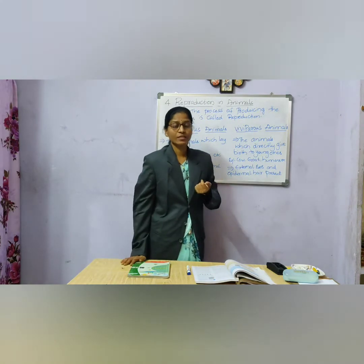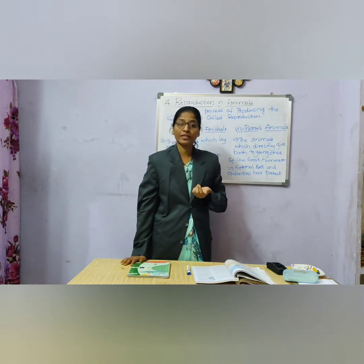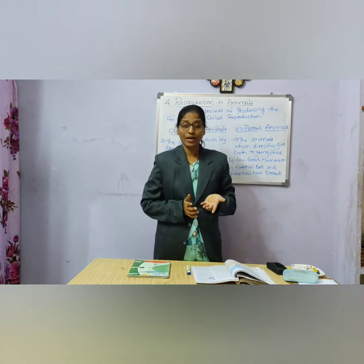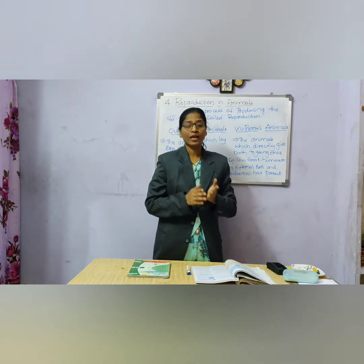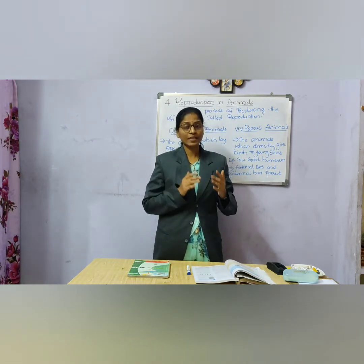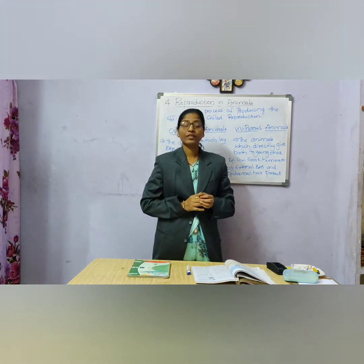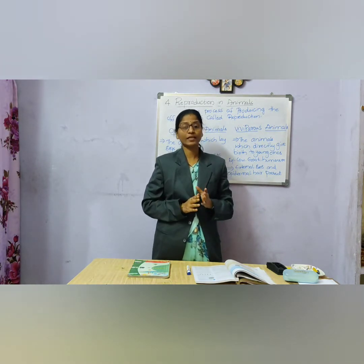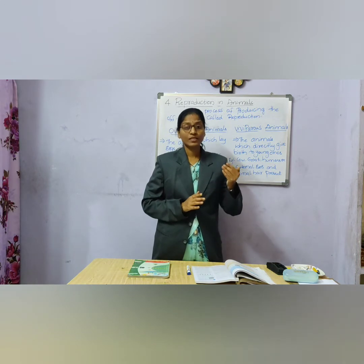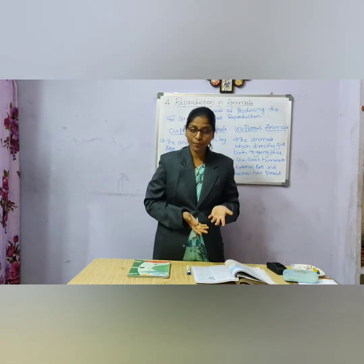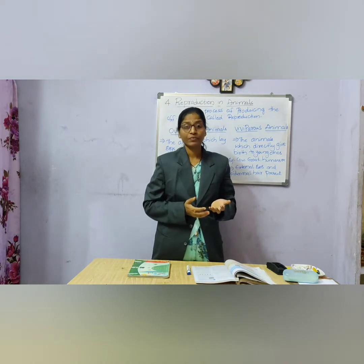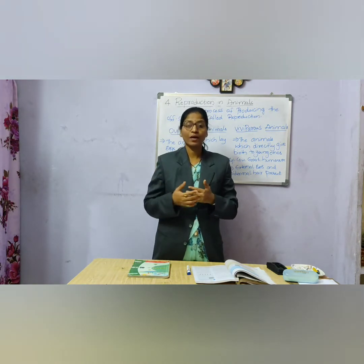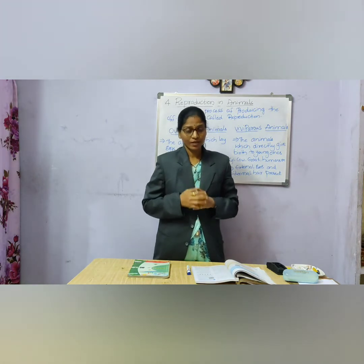In class 7, we studied reproduction in plants where we saw two different modes: asexual mode of reproduction and sexual mode of reproduction. In asexual reproduction, there is no involvement of male and female organisms — directly vegetative parts like root, stem, and leaf give rise to a new plant. In sexual reproduction, male and female organisms are involved and take part in the process of reproduction.